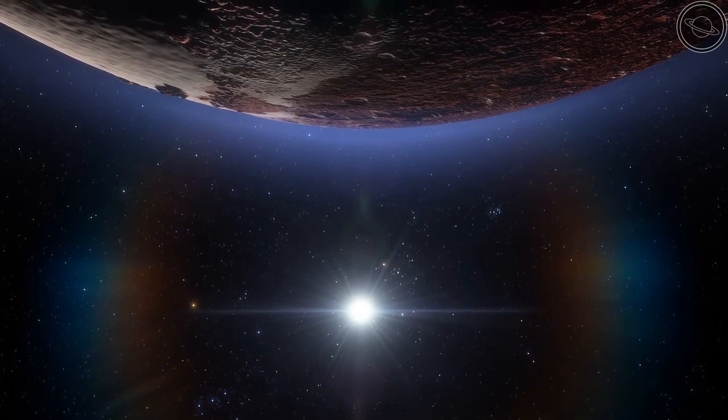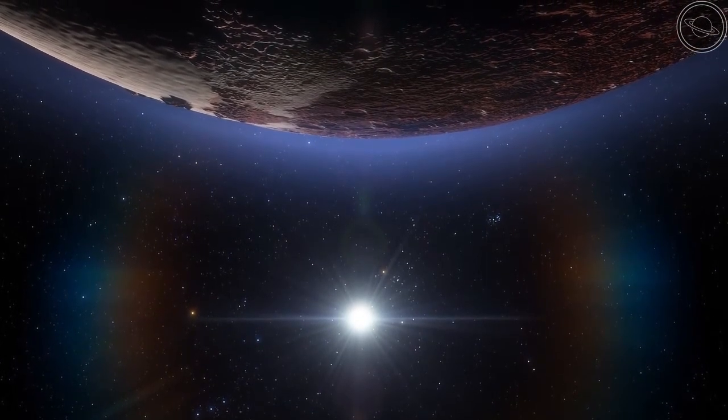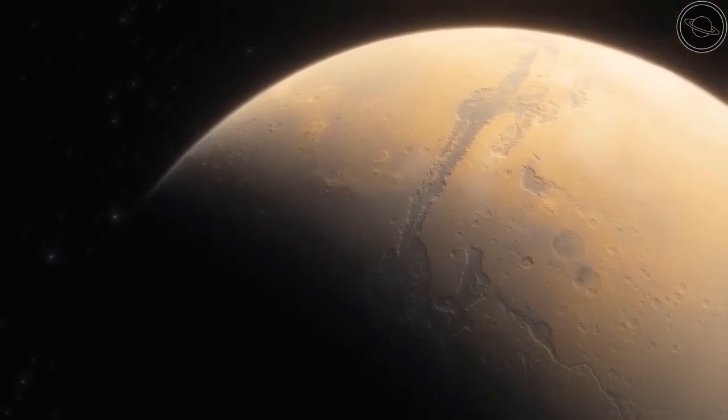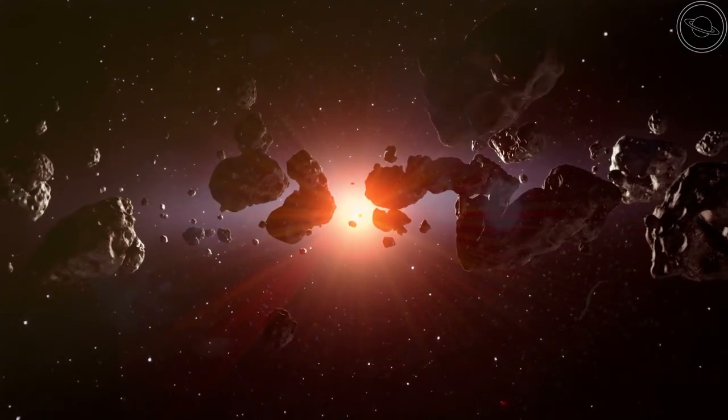To understand why Pluto was downgraded, we must look at the characteristics finally decided upon by the IAU. The first is that a planet must be spherical or almost spherical. So, sorry asteroids, but most of you will not count.